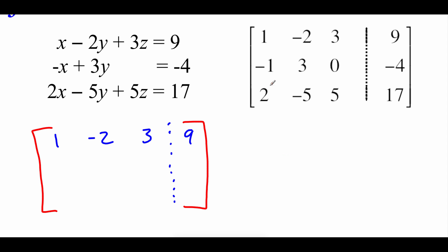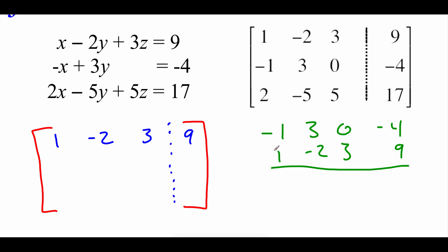Just like we did with our system of equations, we want to get rid of the number in the x position of the second row. We've got negative 3, 1, 0, negative 4 there. We need to turn that first number into a 0. So we take the top row — which already has a positive 1 — and add the two rows together. The negative 1 and the 1 make a 0, 3 and negative 2 gives us 1, then 3 and 5. Now we've got a 0 in the x position and a 1 in the y position, which is what we need. So we fill that in as the second row of our new matrix.